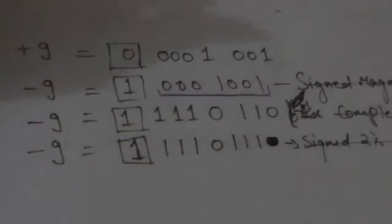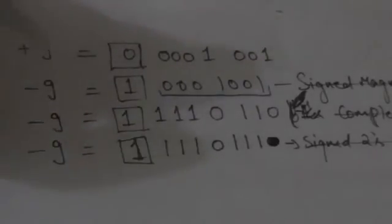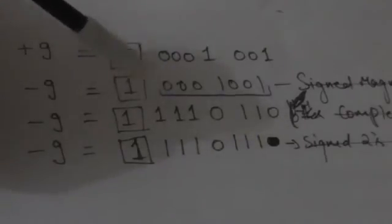Now suppose we have to represent -9 in the signed magnitude representation system. The leftmost bit will be 1, and the rest of the bits will form a binary number whose value is 9. So this signed binary number represents a negative value, that is -9.